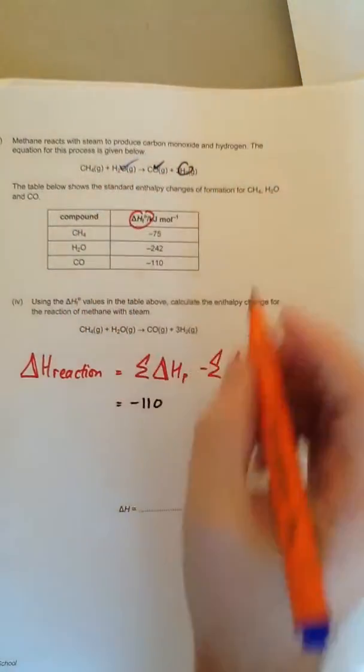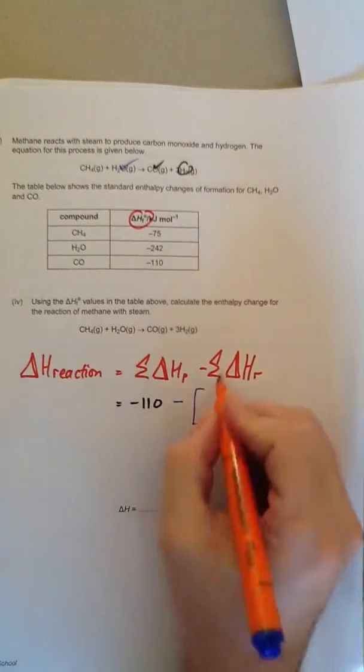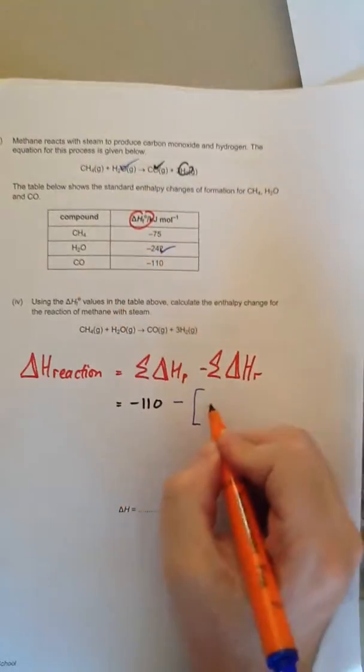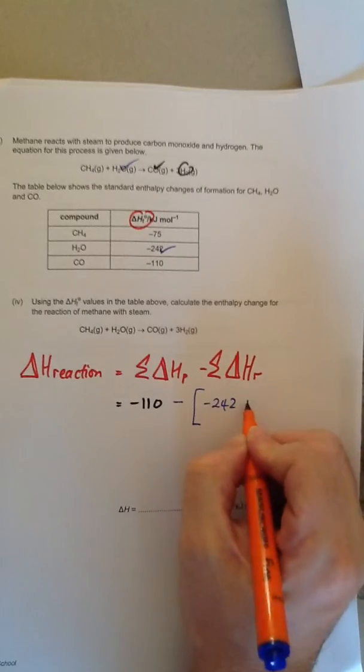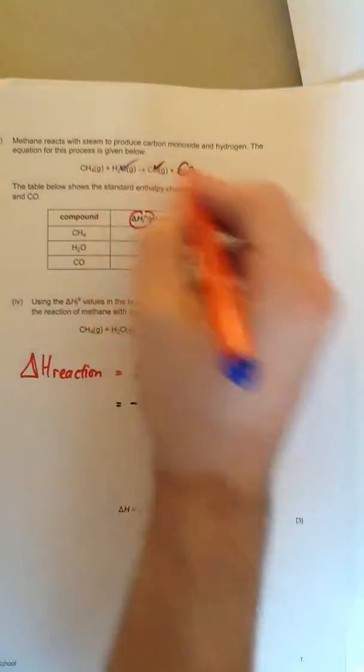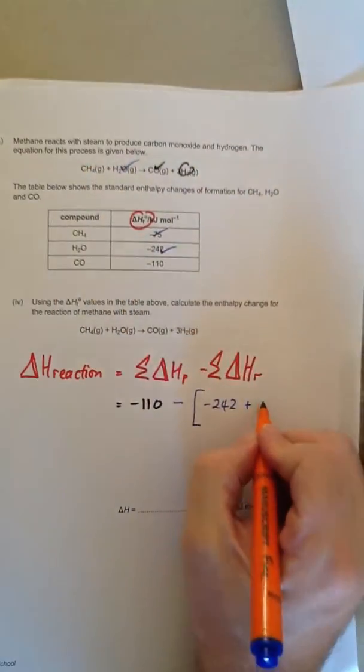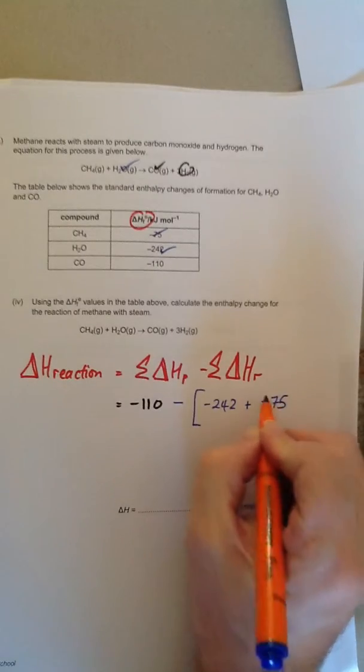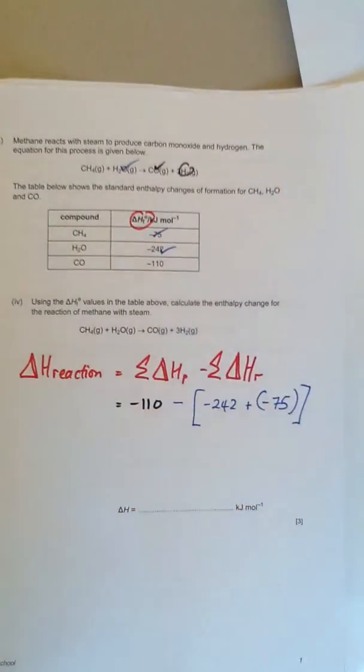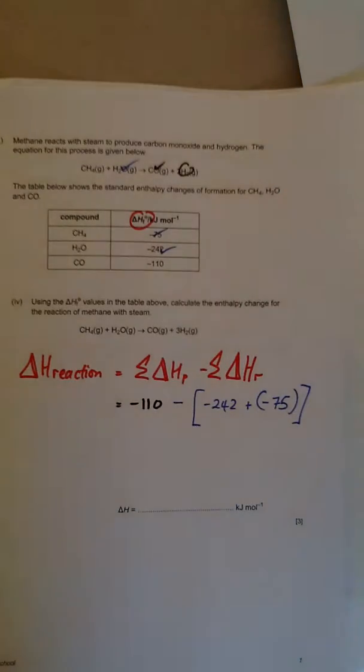The reactants are water, so it's minus, brackets around this, minus water minus 242, plus minus CH4 minus 75. The tricky thing here is to make sure that when you're doing it, you keep your calculated values consistent. You pay attention to the minus signs.